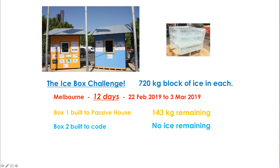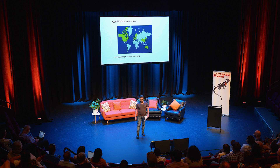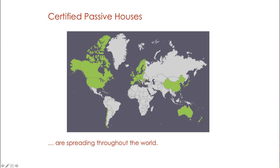Looking at the temperature humidity graphs, the blue line is the Passive House — you can see it's quite stable. The red line is the six star code house, which is not a lot better than the outside conditions. Passive House started in Germany about 30 years ago and has since spread throughout the world — this map is actually quite out of date. The reason it's being adopted by many councils, cities and states around the world as their building code or best practice is because it's a holistic system that actually achieves the results it sets out to and it works straight out of the box. Rather than having lots of rules and regulations they can just say: use Passive House.